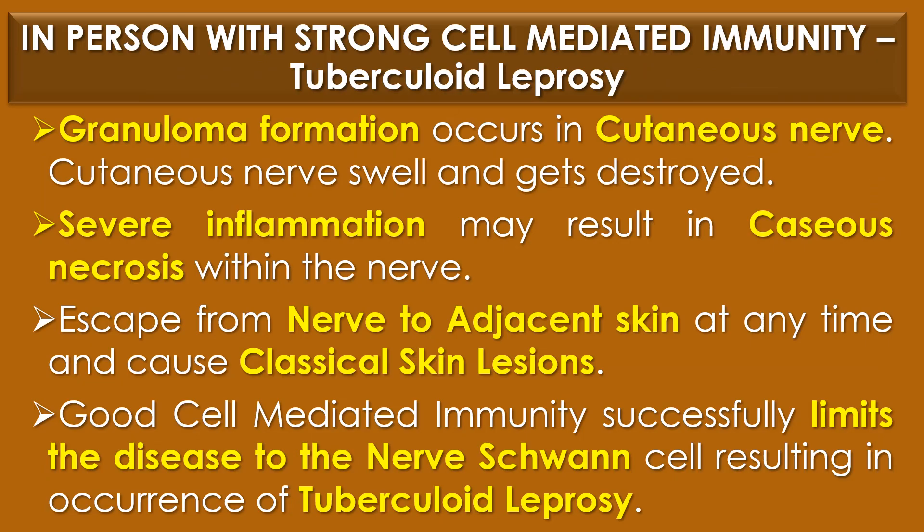If not diagnosed and untreated in the early stages, further progress of the disease is determined by the strength of the patient's cell-mediated immune response. In persons with strong cell-mediated immunity, Mycobacterium leprae causes tuberculoid leprosy or pure neural leprosy. In this condition, granuloma formation occurs in the cutaneous nerves and the cutaneous nerves swell and get destroyed. Severe inflammation may result in caseous necrosis, a unique form of cell death in which the tissue maintains a cheese-like appearance within the nerves.